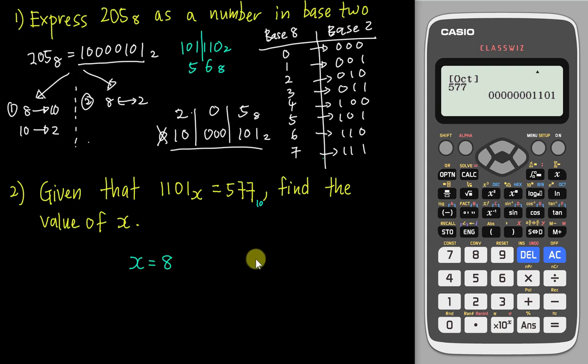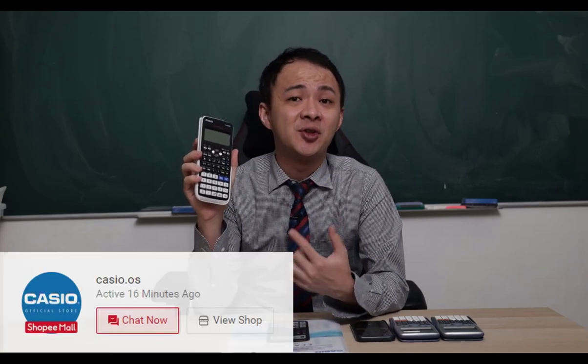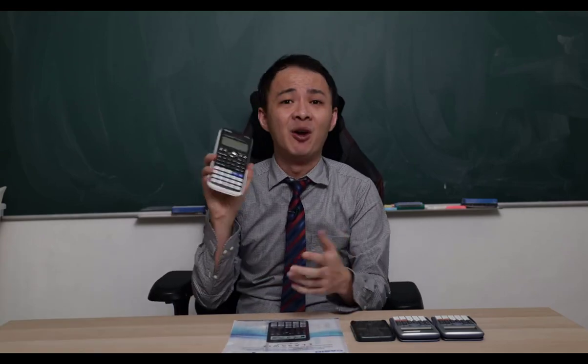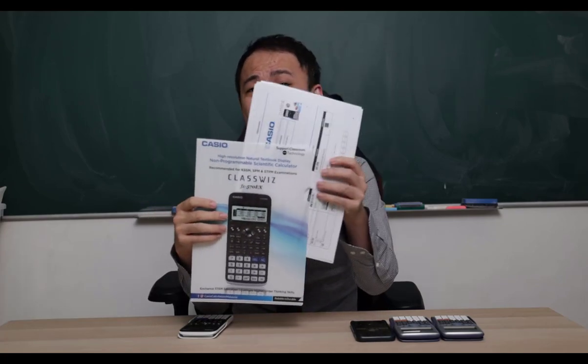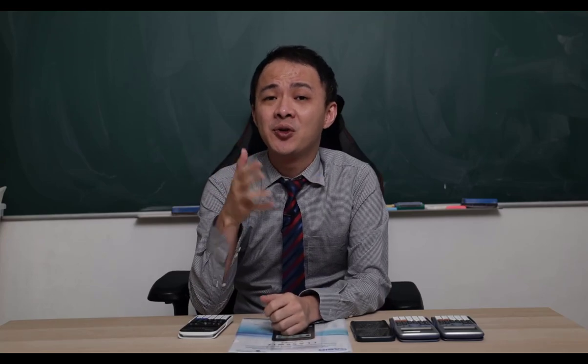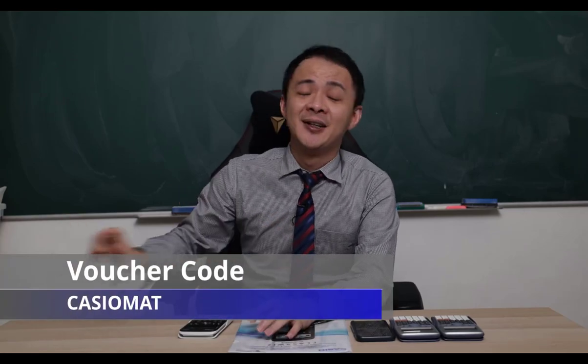That's all for this video. I'll make another base number video for the Casio calculator. I hope you find this video helpful. If you're interested in getting this calculator, I'll share a Shopee link in the description below. The link brings you to the Casio official store, where they are currently doing a promotion — you get a free Casio L-file and a 5 ringgit discount when you use my voucher code.